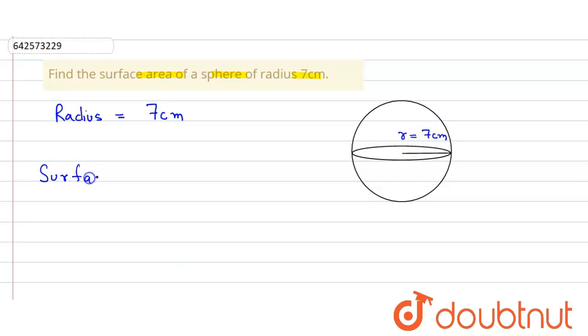So the formula for the surface area of sphere, we know that is equal to 4πr² where r is the radius.